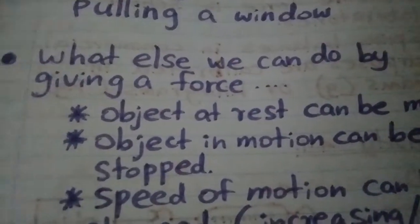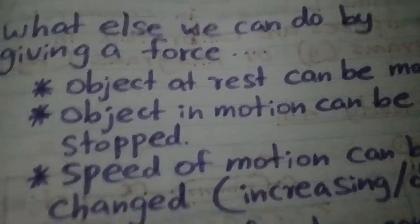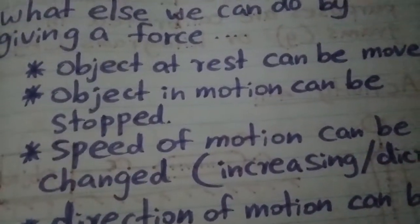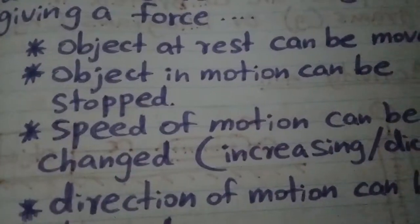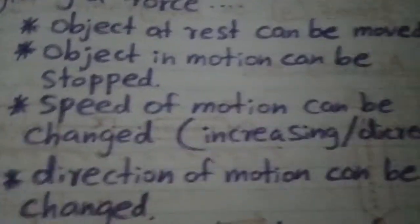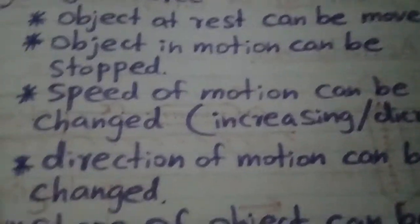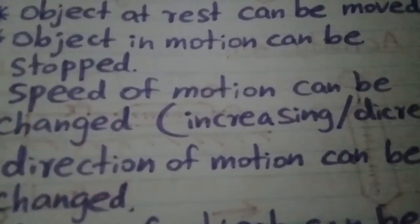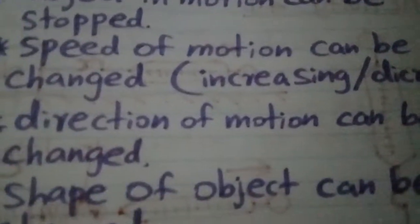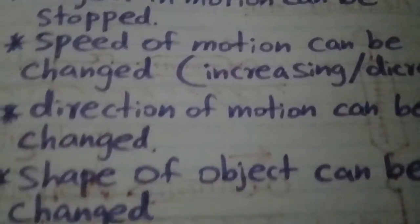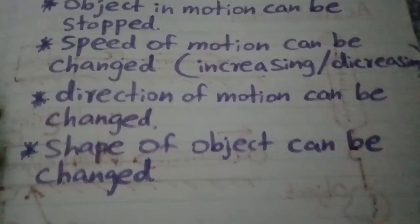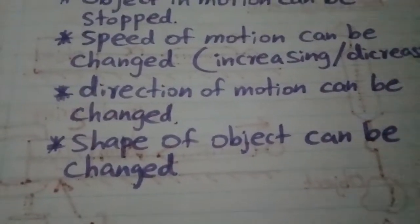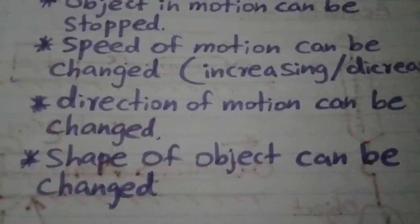By applying a force: an object at rest can be moved, an object in motion can be stopped, and the speed of motion can be changed. For example, we can increase or decrease the speed by applying a force. Also, the direction of motion can be changed.